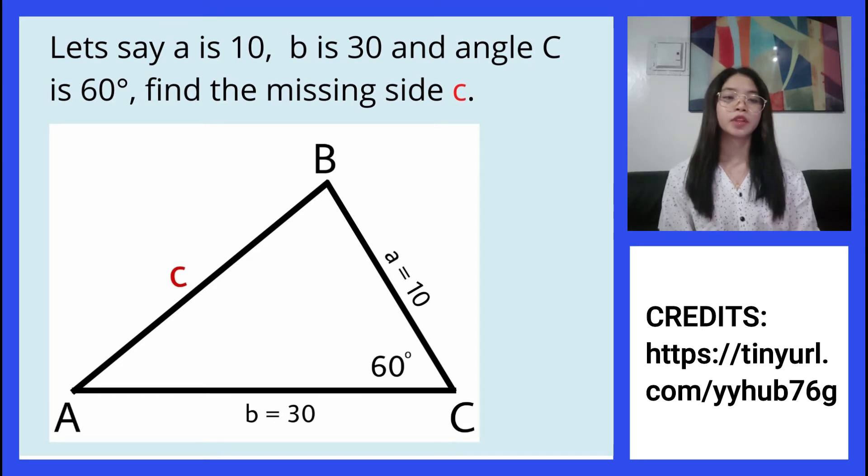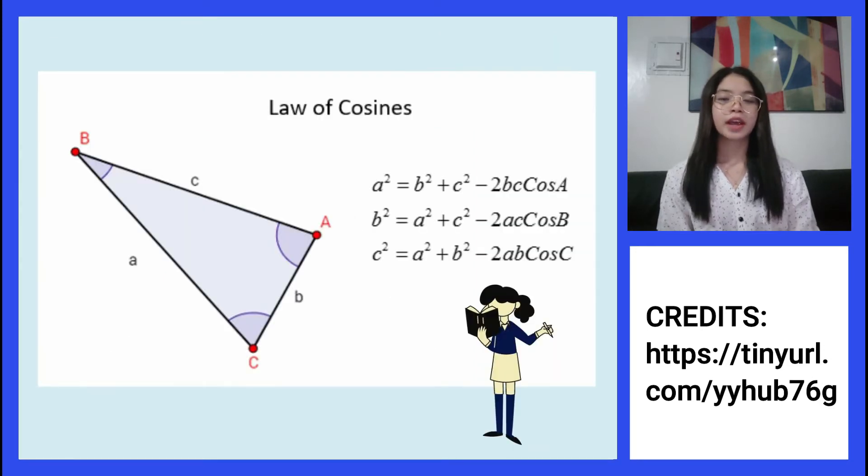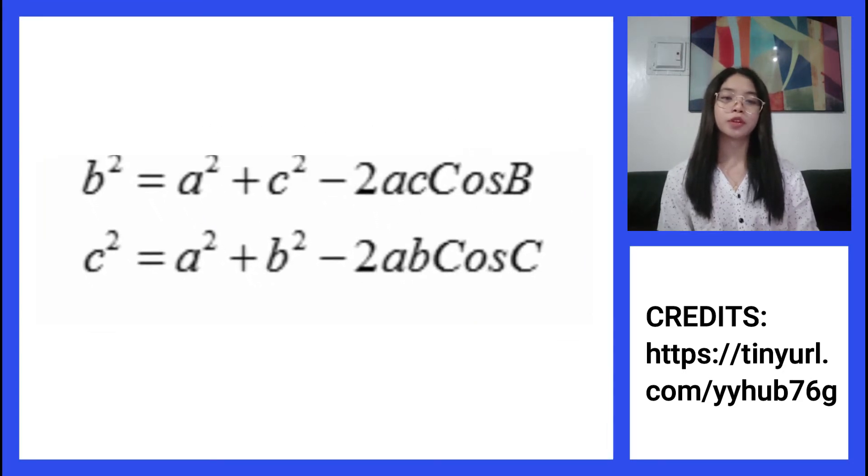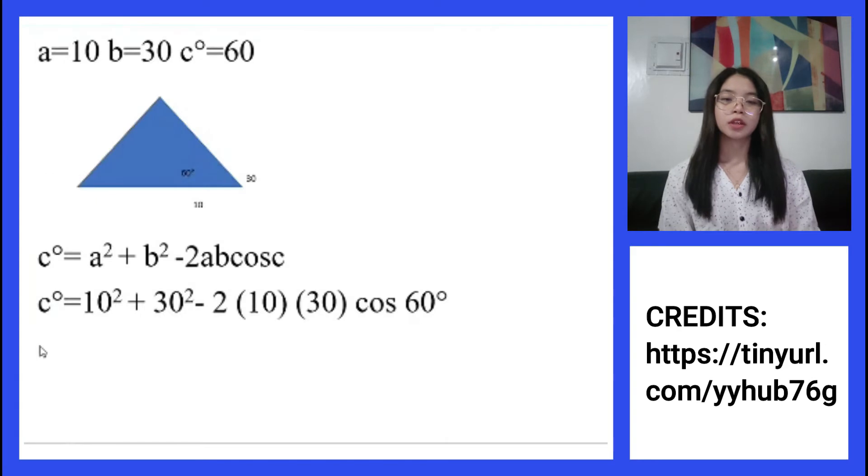In order to solve for side c, we will use the law of cosines. The formula is c squared equals a squared plus b squared minus 2ab cosine of angle C. So let us substitute the given problem into the formula. We have side a, which is 10 squared, plus side b, which is 30 squared, minus 2 multiplied by sides a and b, which is 10 and 30, and cosine of angle C, which is 60 degrees.